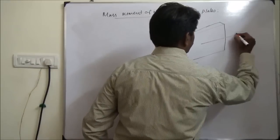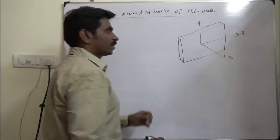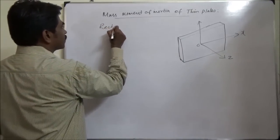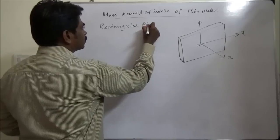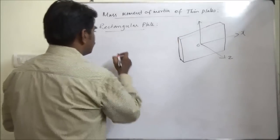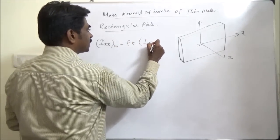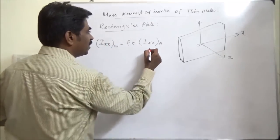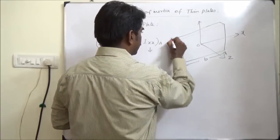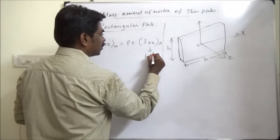For the rectangular plate, the centroid is at the center. Let the width be B and the height be H. So the area moment of inertia about the x-axis, Ixx_area, is B·H³/12.